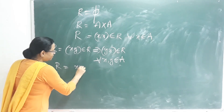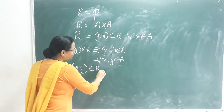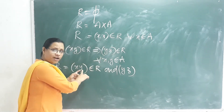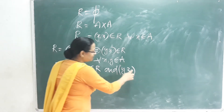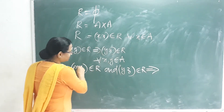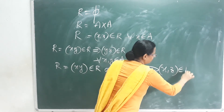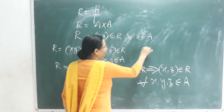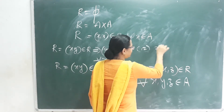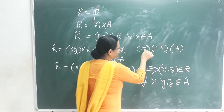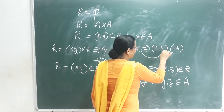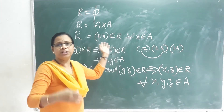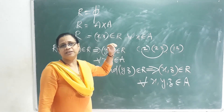The next type is the Transitive Relation. If (x, y) is an element of R and (y, z) is an element of R, then (x, z) must also be an element of R, for all x, y, z in A. For example, (1,2) ∈ R and (2,3) ∈ R implies (1,3) ∈ R. These three — reflexive, symmetric, and transitive relations — are important.